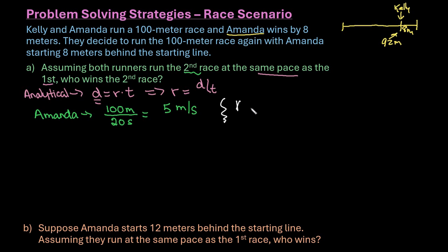Kelly was at 92 meters because she was 8 meters behind Amanda when Amanda crossed the finish line. So she went 92 meters in 20 seconds. If we do that division, 92 divided by 20 gives me 4.6. So she ran at a rate of 4.6 meters per second.